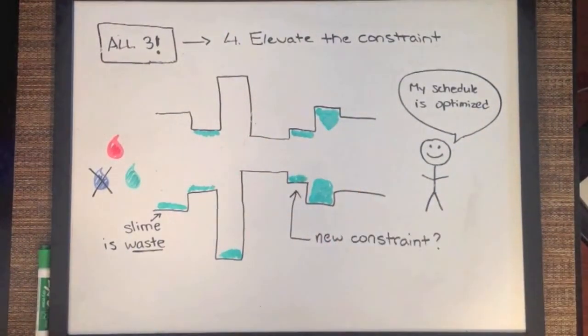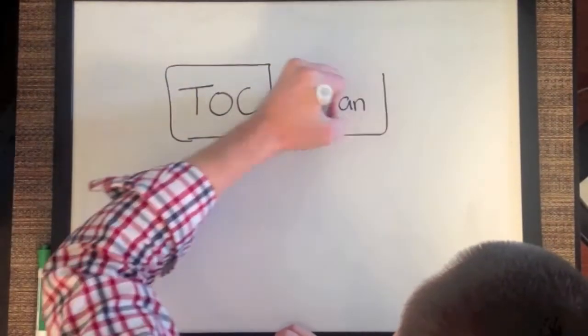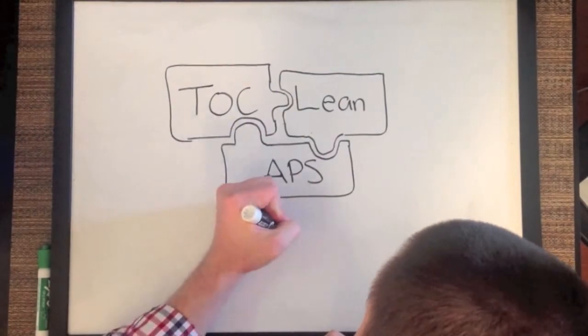a different section of the pipe may become the system constraint and you may need to apply Lean concepts to that section to remove the slime. You may also want to use Advanced Planning and Scheduling to ensure you have the optimal production schedule given the new structure of the pipe. The pipe example shows that while Theory of Constraints, Lean, and Advanced Planning and Scheduling all do different things, they fit together like puzzle pieces to produce outstanding results.